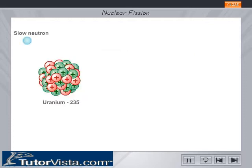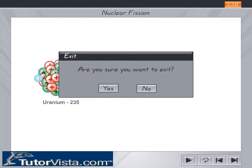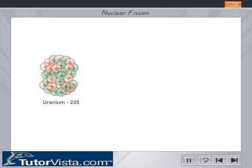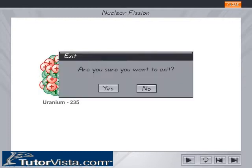The nucleus of U-235 captures a slow-moving neutron and disintegrates into barium and krypton, releasing a tremendous amount of energy along with neutrons.